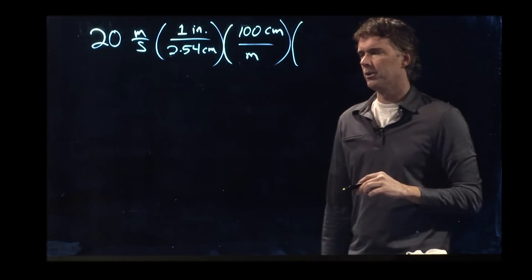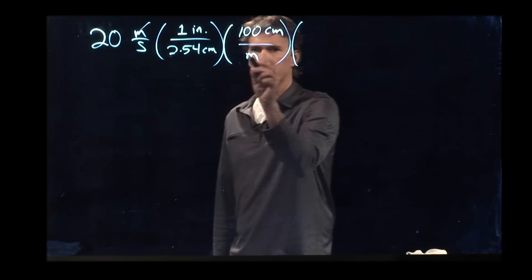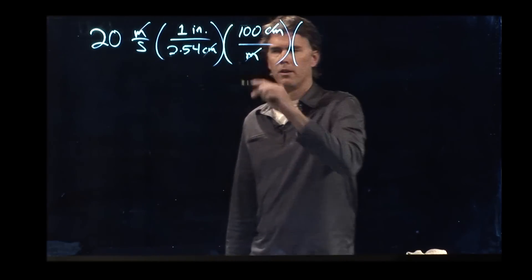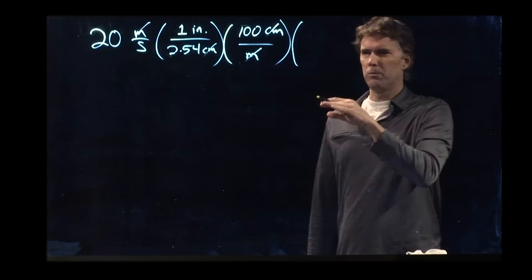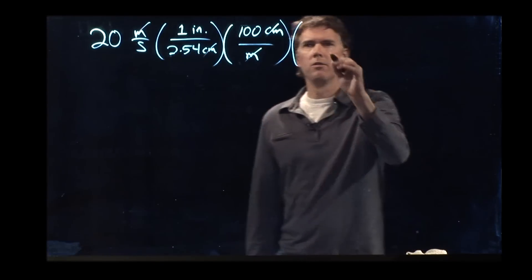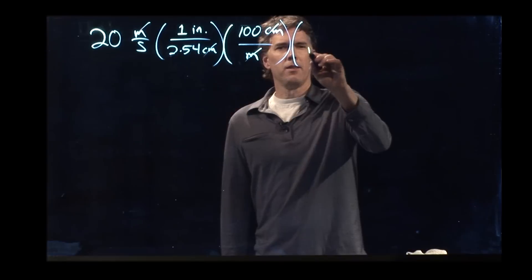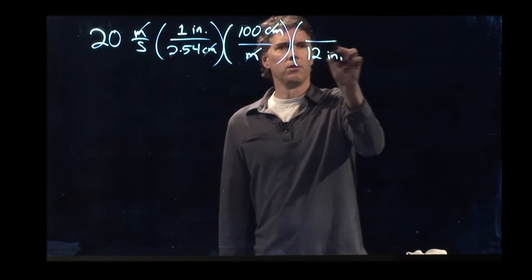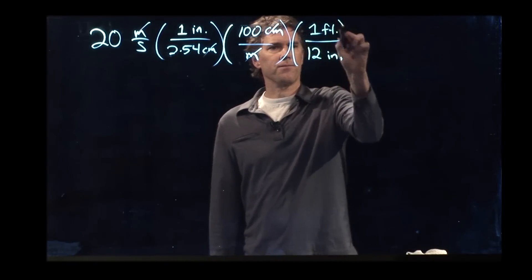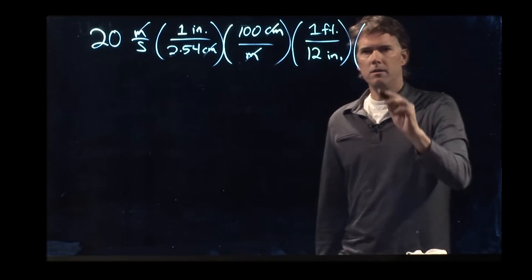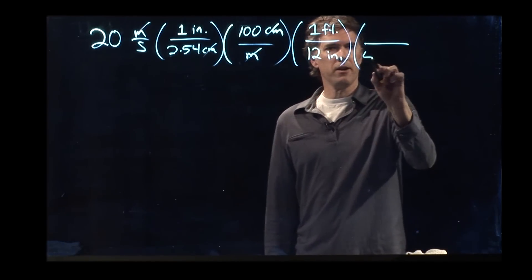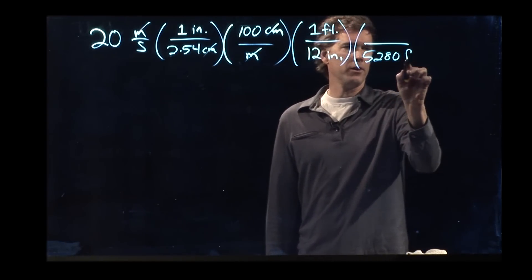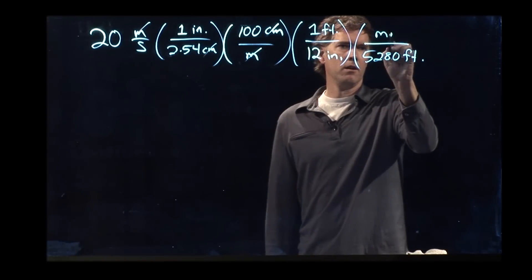Okay. Then what are we left with? Well, we can cross out the meters. We can cross out the centimeters. And now we're left with inches, and somehow we've got to get inches into miles. So we remember that there are 12 inches in one foot, and maybe you remember there are 5,280 feet in a mile.